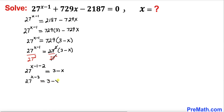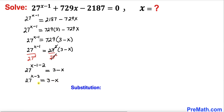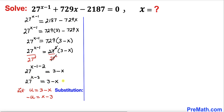To simplify, let's make a substitution. Let u equal 3 minus x, which means negative u equals x minus 3. So the exponent becomes negative u, and the right hand side becomes u. Our equation transforms into: 27 to the power negative u equals u.